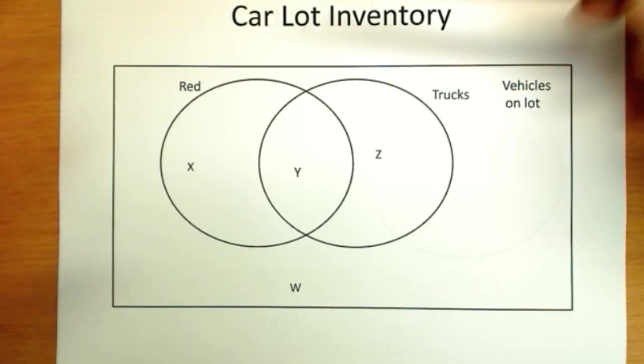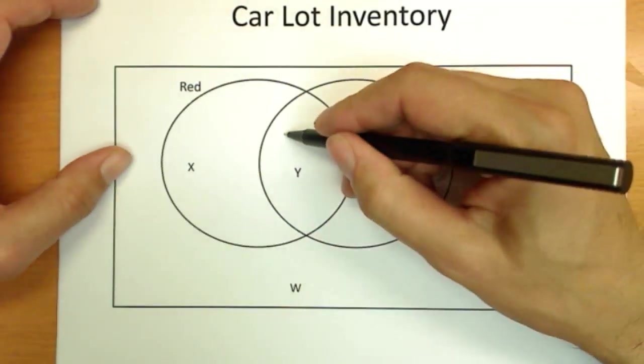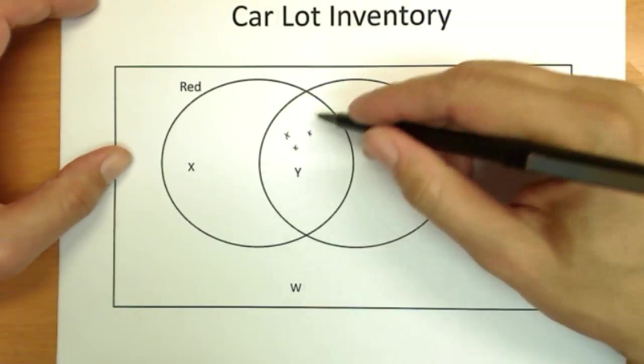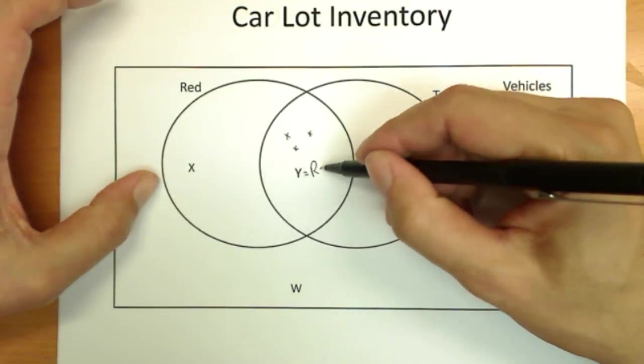So red items or red vehicles are inside this circle, and vehicles that are trucks are inside this circle. So any X's, any dots that I could put inside this part here, or Y in general, has both of the properties. These are red trucks.